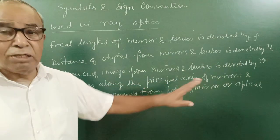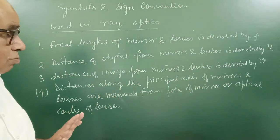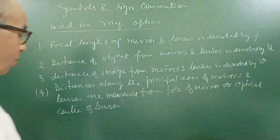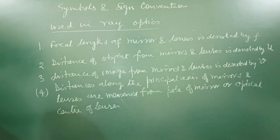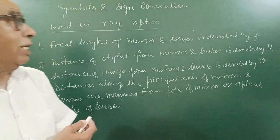So, distances along the principal axis, you will learn here, what I am telling. From the mirror or lenses are measured from pole of mirror and optical center lens.